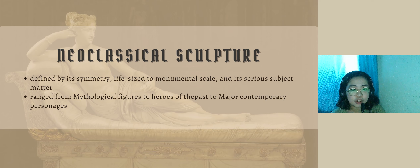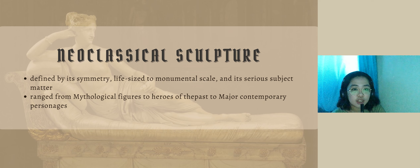Neoclassical sculptures share common features such as a love of symmetry, perfect proportions, and balance of composition. Neoclassical statues range in size from true-to-life dimensions through monumental scale. Neoclassical sculptures range in subject matter from mythological figures to historical heroes, deities, and famous contemporary people of the era. While some sculptures could display idealized characteristics, others showed an extremely naturalistic depiction of the subject.